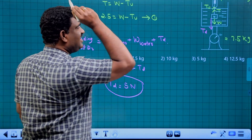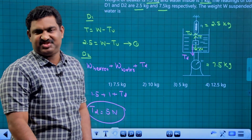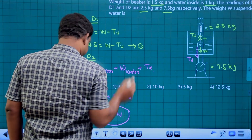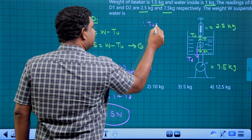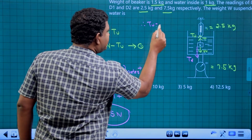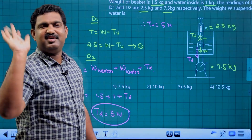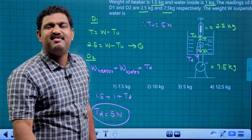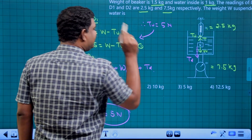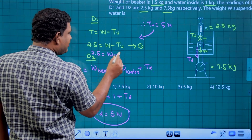The up thrust equals the down thrust, so up thrust is also 5 Newton. They are equal and opposite — action-reaction. So from the first equation: 2.5 = W minus 5, which gives W = 7.5 kg. The answer is W = 7.5 kg.